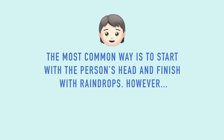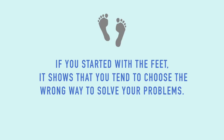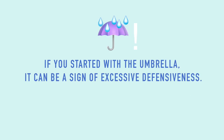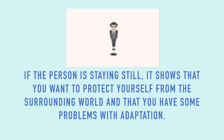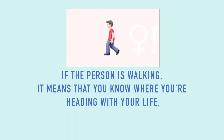The most common way is to start drawing with the person's head and finish with the raindrops. If you started with the feet, it shows you tend to choose the wrong way to solve problems. Starting with the umbrella can be a sign of excessive defensiveness. If the person is staying still, it shows you want to protect yourself from the world and have problems with adaptation. If the person is walking, it means you know where you're heading in life.